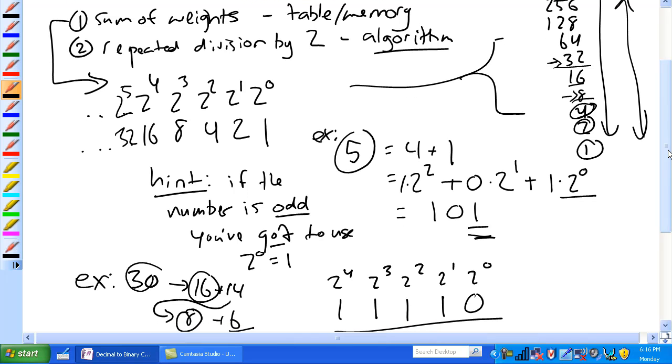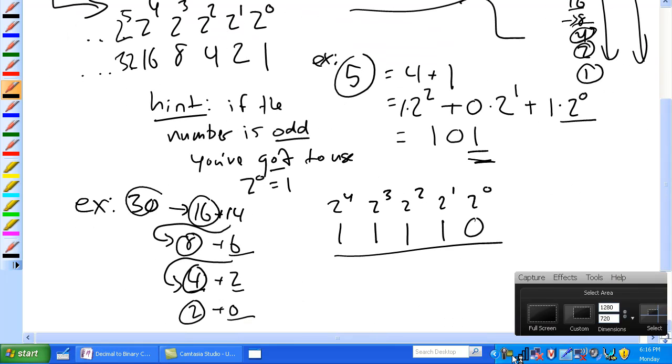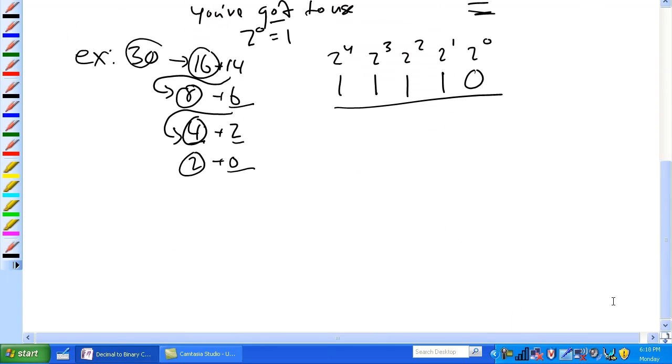So, let's talk about that using an algorithm, something like a computer. Sum of weights rely on memorization of the table. What about very large numbers? Basically, you're going to use the repeated division by 2 method.